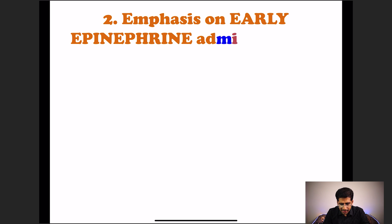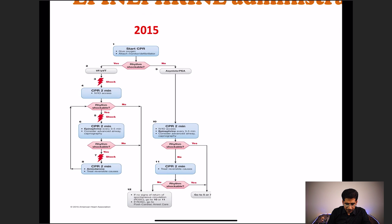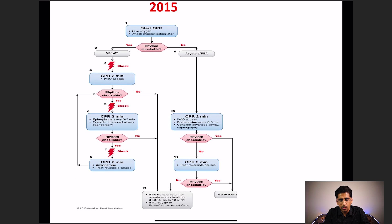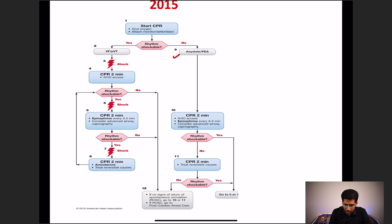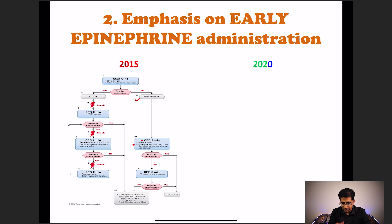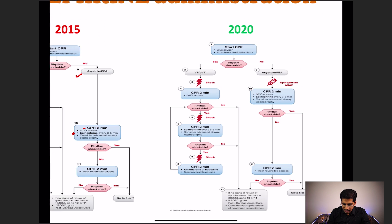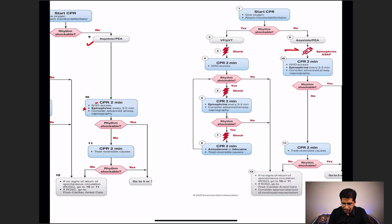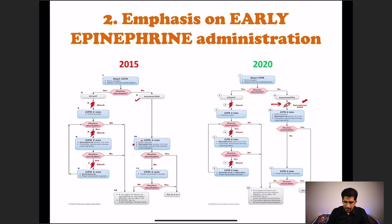The second update is more emphasis on early epinephrine administration. Previously in 2015, in cases of asystole or PEA, you had to start CPR first and then give epinephrine. Now in 2020, epinephrine is given earlier — in cases of asystole or PEA (pulseless electrical activity), epinephrine is administered before starting CPR, and then repeated every three to five minutes.